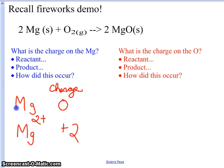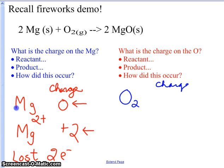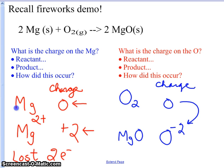So the question is: how did that occur? How did magnesium go from a charge of zero — where protons and electrons are equal — to a plus two charge, where protons and electrons aren't equal? Magnesium lost two electrons. Conversely, we have oxygen as a reactant, O₂. Initially, because it's an element, its charge is zero. But in the compound state, oxygen has a charge in magnesium oxide of minus two. So oxygen goes from zero to minus two — oxygen gained two electrons.